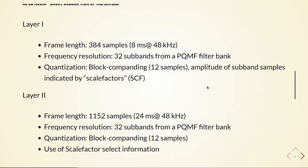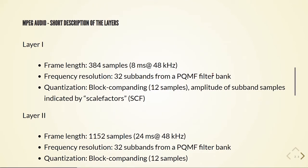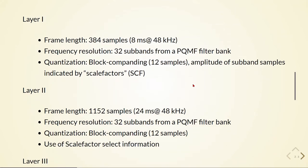Layer 1 uses a frame length of 384 samples, which is 8 milliseconds at 48 kilohertz. It has a frequency resolution of 32 subbands from a PQMF filter bank and uses block compounding quantization using 12 samples, with the amplitude of subband samples indicated by scale factors (SCF). Layer 2 has a frame length of 1152 samples, which is 24 milliseconds at 48 kilohertz. It also has 32 subbands from a PQMF filter bank, uses block compounding quantization with 12 samples, and also uses scale factor select information.